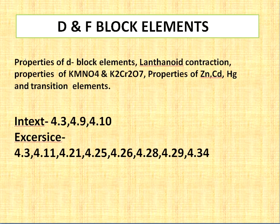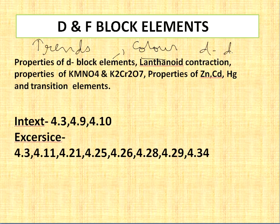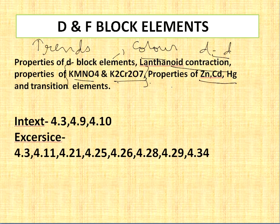Next is the d and f Block Elements. First, learn the trends — what happens from top to bottom and from left to right — and the properties of d-block elements, including where they show colour. The d-d transition in coordination compounds is also there. The most important topic is lanthanoid contraction, which is regularly and repeatedly asked in board exams. Also learn the properties of KMnO4 and K2Cr2O7, including their preparation. Note that zinc, cadmium, and mercury are not transition elements — this can definitely come in the exam.